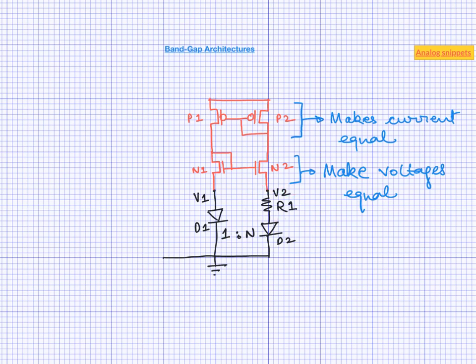This current conveyor circuit ensures that R1 has the PTAT voltage across it, producing a PTAT current in both branches. We already know the next step once we have PTAT current available. However, this circuit solves only the complexity and area problem — the other problems remain, possibly even worse. So let's look at another architecture that addresses almost every problem.